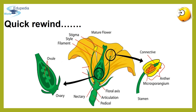The carpel is composed of three parts, namely the stigma, style and the ovary. The ovary contains the ovule. Besides the primary parts, there are accessory parts as well that provide protection to flowers in the bud stage or help in pollination. These accessory parts primarily include sepals and petals.